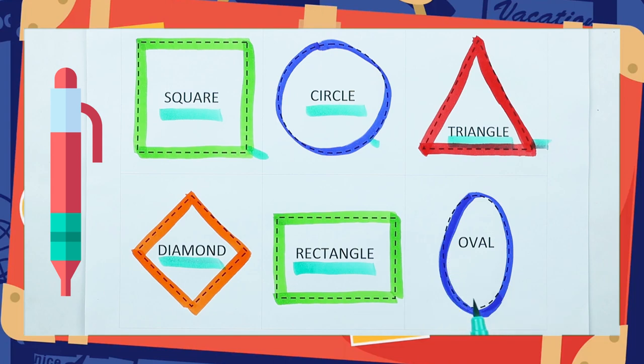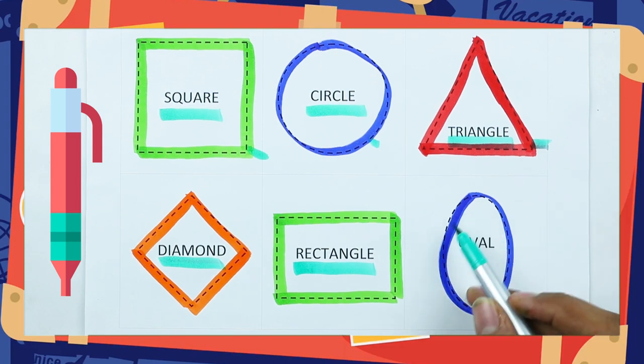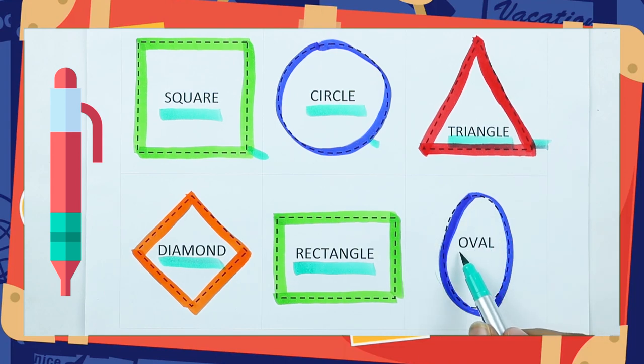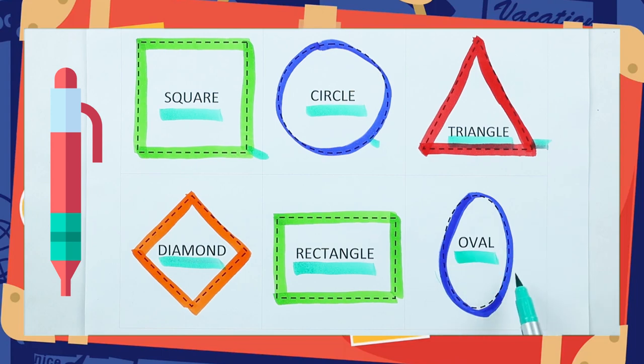With green color. Which shape is this? Oval. Right. O-V-A-L. It's an oval, with blue color.